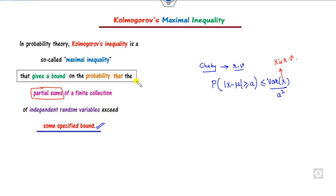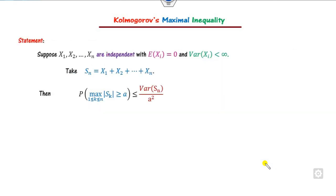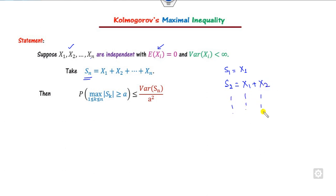This inequality was defined by the Russian mathematician Andrey Kolmogorov, who was born in 1903. The statement of the Kolmogorov maximal inequality is: if you have a sequence of independent random variables such that the expected value of each X_i is zero and the variance is finite, then you can take the partial sums S_1 = X_1, S_2 = X_1 + X_2, and so on. Then the probability that the maximum among all S_i is greater than a equals the expression shown.